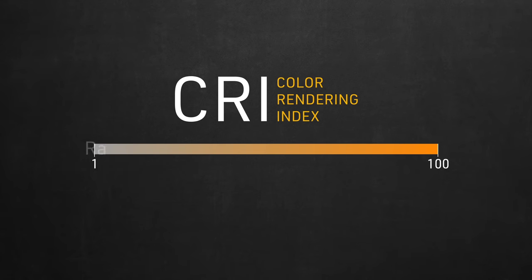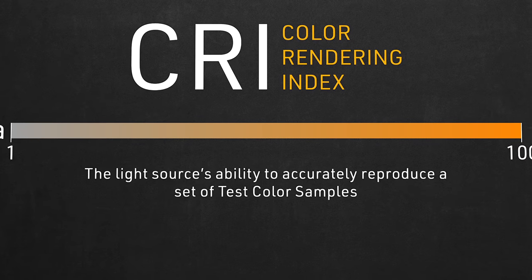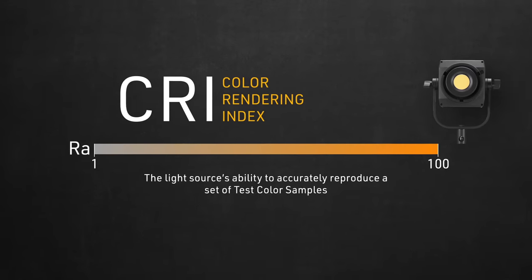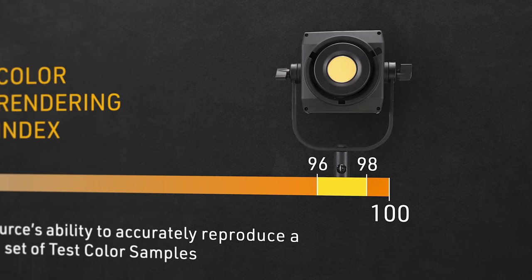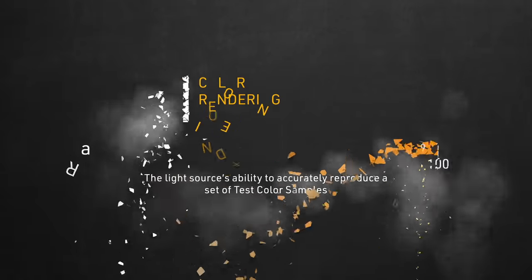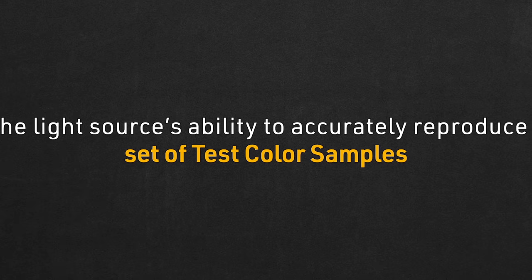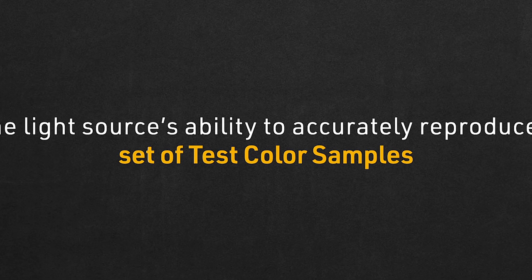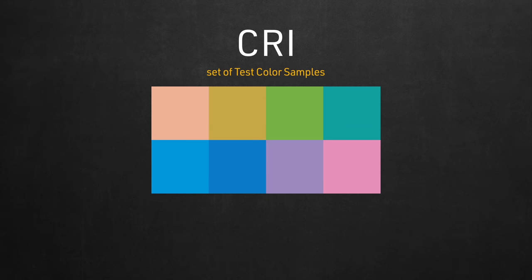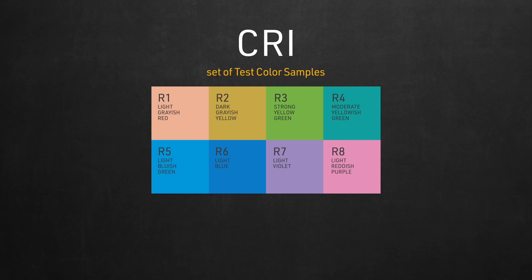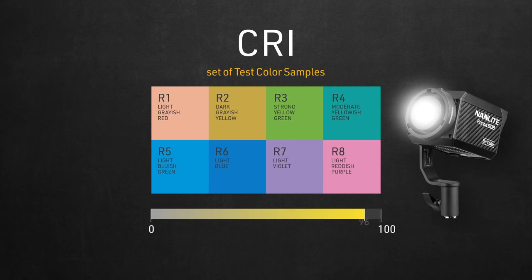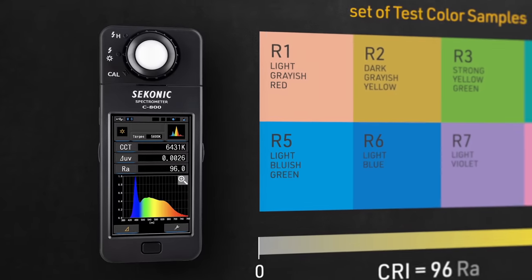CRI's score is measured on a scale of 1 to 100 in RA value. By definition, it represents the light source's ability to accurately reproduce a set of color samples. The light source ability to accurately reproduce a set of test color samples — and this is the first problem we have with CRI. Because these are the CRI's only test color samples it's referring to: just 8 colors numbered from R1 to R8. To demonstrate, I got my Nanlite 60B, which is officially advertised to have a CRI of 96, and I confirmed that with my spectrometer.